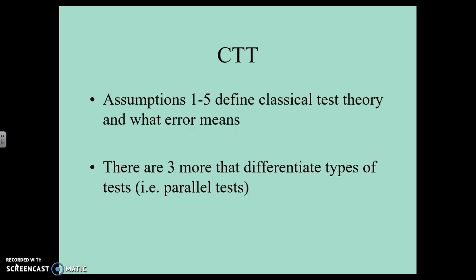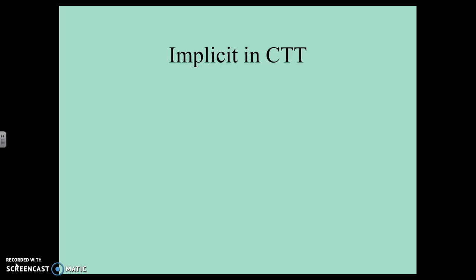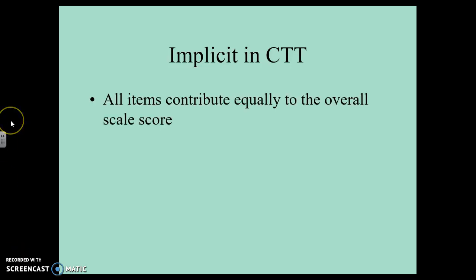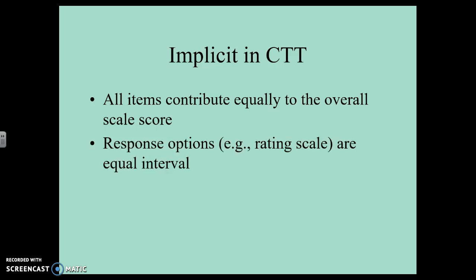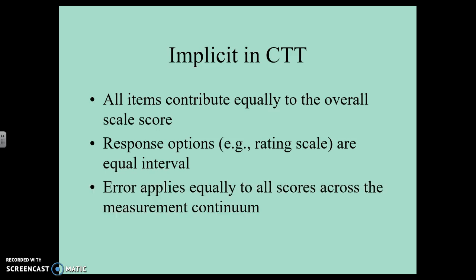There are three more assumptions that differentiate types of tests. First, implicit in classical test theory is that all items contribute equally to the overall scale score — so if we have 10 items measuring anxiety, every item contributes equally. Second, we assume the rating scale of 1 to 4 is equal interval — that 1, 2, 3, and 4 are completely equal and the intervals between them are the same. Third, error applies equally to all scores across the entire measurement continuum — people scoring higher in anxiety have the exact same error as people scoring lower.